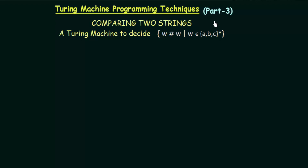As we continue studying Turing machine programming techniques, we shall see another example for comparing two strings. Our task is to design a Turing machine which can decide strings of the form w#w, where w belongs to the closure of {a, b, c}. We need to compare two parts of a string — the first half w, a hash symbol denoting the midpoint, and the second half w. The string w can contain symbols from the set {a, b, c}.